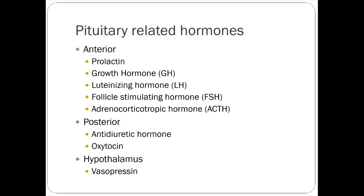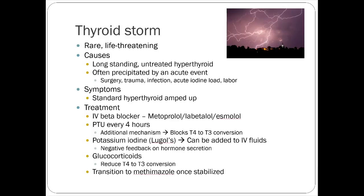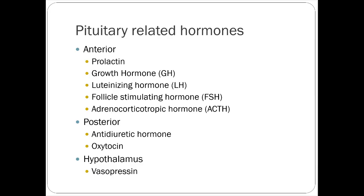To clarify the thyroid storm regimen: PTU is given every four hours. Iodine is added to IV fluids to trigger negative feedback, suppressing TSH and T3/T4 release — but PTU must be on board first to shut down production before giving iodine, which would otherwise stimulate further hormone production.